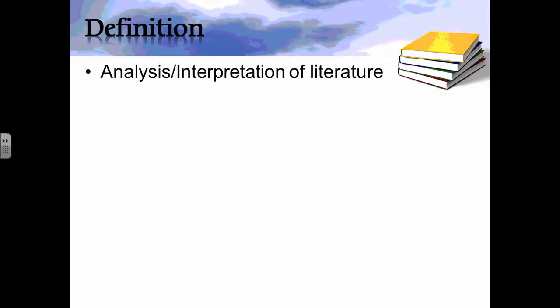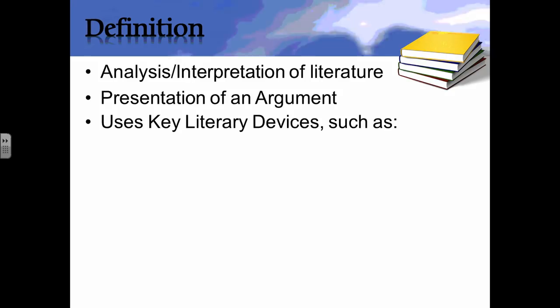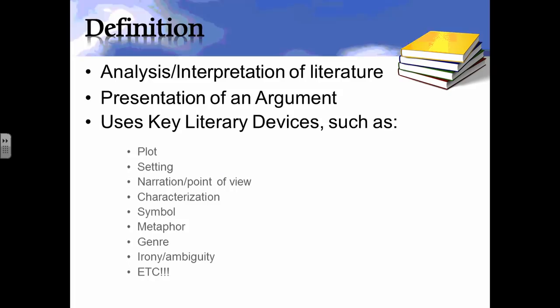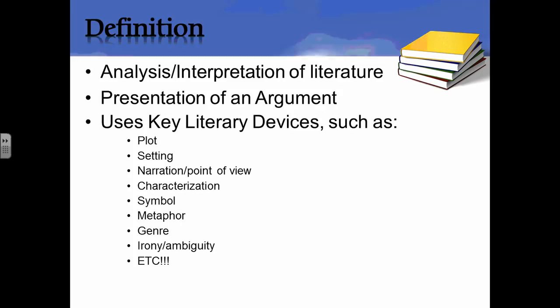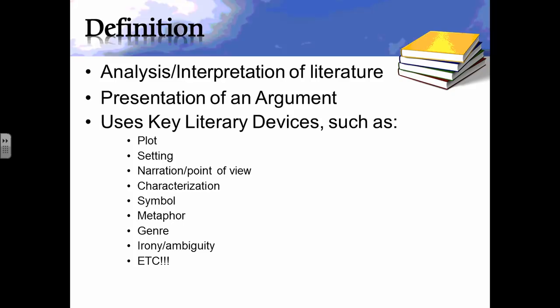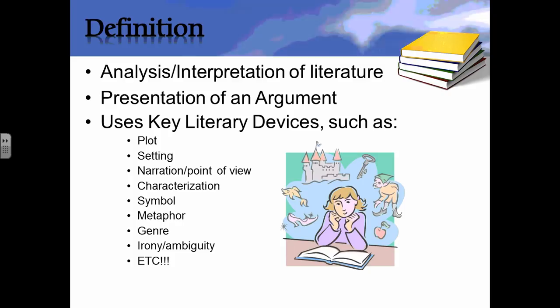We're going to present an argument or make an opinion statement, and we're going to support that argument with literary devices you've used throughout your school career — things like plot, setting, point of view, first person, second person, characterization, flat and round characters, dynamic and static characters, symbols, metaphors, different types of genres, and irony. You've been spotting these all along, but now you're going to use them as tools to support your opinion about the deeper meaning of the piece.